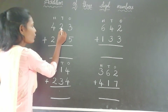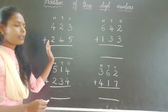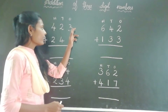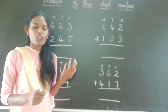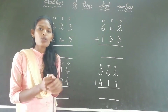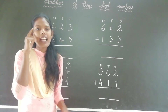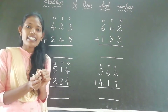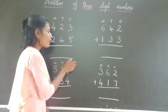Here see the first problem: 423 plus 245. What is the ones place? 3 and 5 — these numbers are at the ones place. So first, keep the first number in your mind and count on your fingers for the second number. Keep 3 in your mind and take 5 fingers. What comes after 3? 4, 5, 6, 7, 8. The answer is 8. Write it under the ones column.